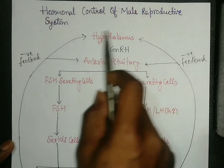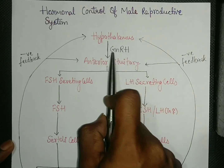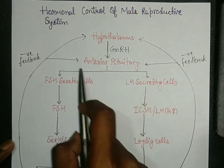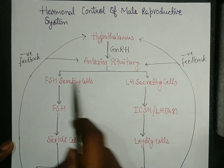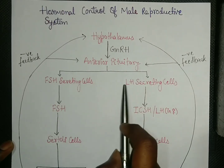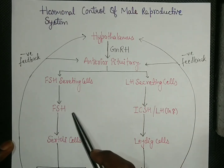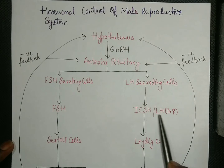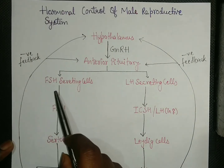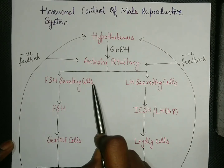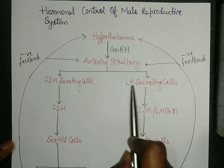The hypothalamus releases GnRH, that is gonadotropin releasing hormone, and this acts on the anterior pituitary gland. The anterior pituitary gland has FSH-secreting cells and LH-secreting cells, which stimulate FSH release and ICSH or LH hormone release. FSH stands for follicle stimulating hormone and LH stands for luteinizing hormone.